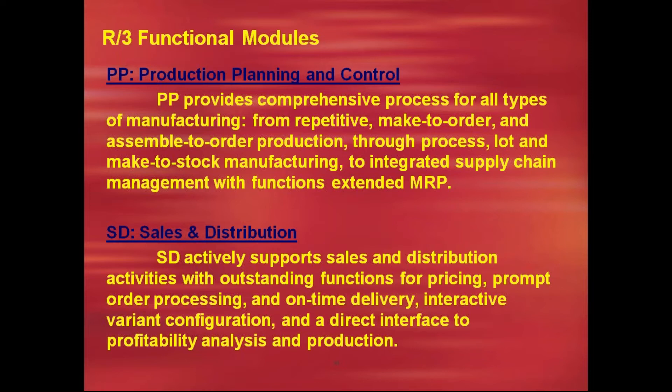Make-to-stock planning means the company is not expecting any order from the customer — we plan, we execute, and we make the stock of the material available in stores. When the customer places an order, we directly deliver the material. Think of all your supermarket and grocery items — for these you don't need a customer order. Depending on the planning activities, production planning people produce a finished material.